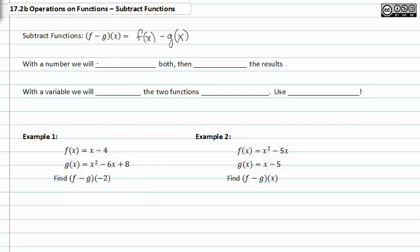With a number, we'll evaluate both, then subtract the results. With a variable, we'll subtract the two functions together. Don't forget to use parentheses.